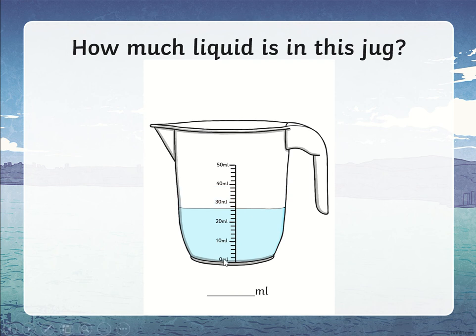Let's have a look at this one. Zero, ten, twenty — it's going up by twos: two, four, six, eight. The water line is in between the six and the eight, and remember it's above twenty and below thirty. So have a think about what that is — twenty-seven milliliters.